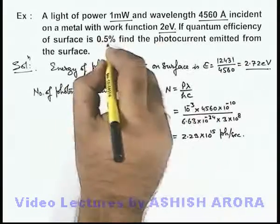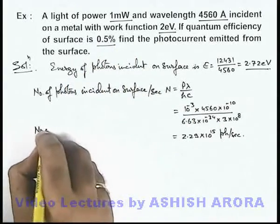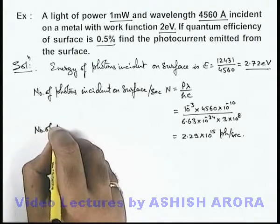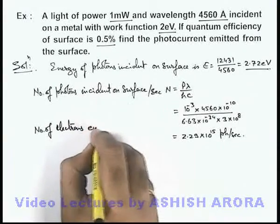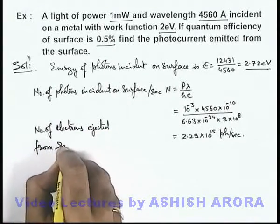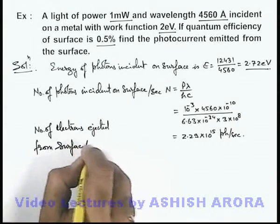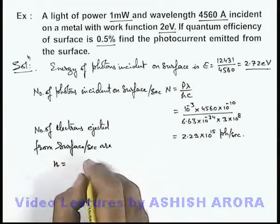And as quantum efficiency is 0.5 percent we can calculate the number of electrons or we can call photoelectrons ejected from surface per second. This small n can be written as 2.29 into 10 to power 15 are the photons multiplied by only 0.5 percent are emitted.